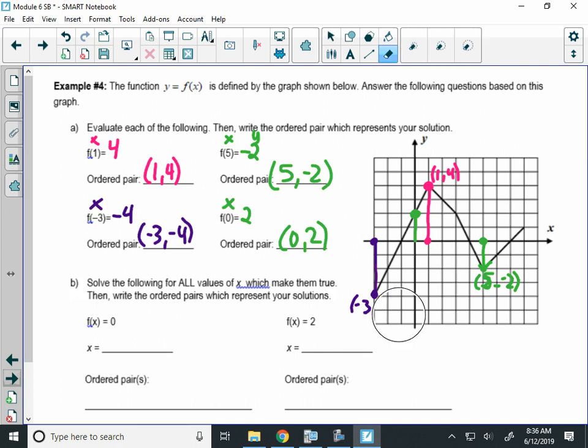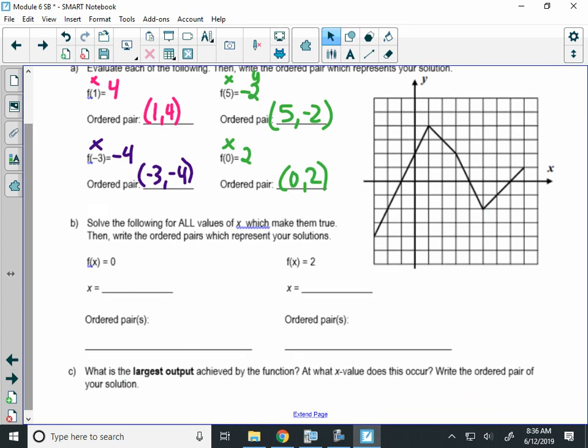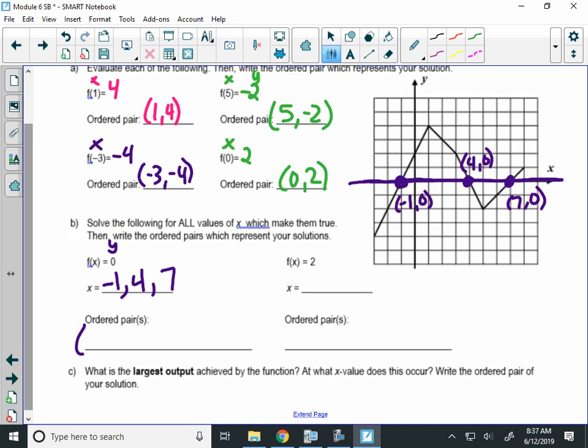Alright, now, we're going to go the other way. It says, solve the following for the values of X that make this function notation true. First one says, what X value does F of X equal 0? Well, that's the Y value of 0. And back a couple modules ago, we talked about graphing lines. And we said, if we know Y equals 0, that's a horizontal line. So, I'm going to draw a horizontal line at Y equals 0. That happens to be the X axis. And what I'm going to do is, I'm going to mark where my graph crosses the line I drew. And I'm going to write down those X values I marked. The first one was X equals negative 1. The second one was X equals 4. And 7. So, that means those points, what I marked here, that was the point negative 1, 0. 4, 0. 7, 0. Which were all points that had Y value of 0. Which is what I was actually looking for. I was looking for the X values that gave me an output of 0.